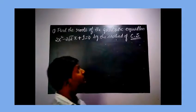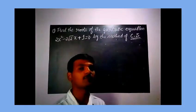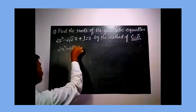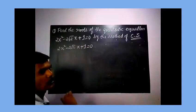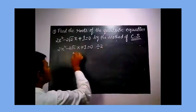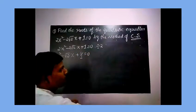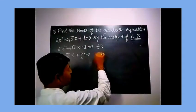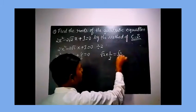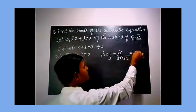The next example: find the roots of 2x squared minus 2√2 x plus 1 equals 0 by the method of completing the square. The coefficient of x squared is 2, so divide the whole equation by 2. We get: x squared minus √2 x plus 1/2 equals 0. The coefficient of x is √2. Multiplying by 1/2: √2 times 1/2 equals √2 divided by 2, which can be written as 1/√2, since 2 equals √2 times √2.